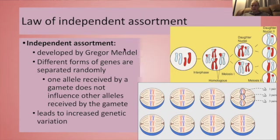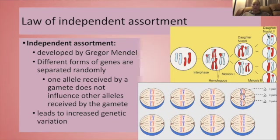Independent assortment was developed by Gregor Mendel in the mid-1800s by looking at pea plants. The idea is that the alleles a gamete gets for a particular gene have nothing to do with the alleles of other genes that that gamete gets. For example, the hair color coded for in this gamete will have nothing to do with the eye color, which will have nothing to do with whether or not this gamete contains a gene for freckles or being able to roll one's tongue. This is going to lead to genetic variation in our offspring because all of these genes are being separated individually.